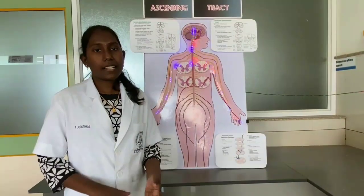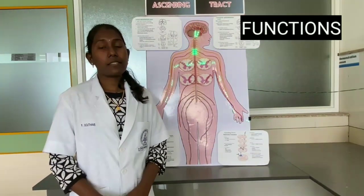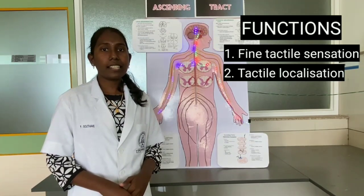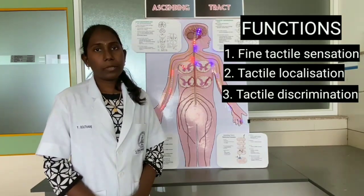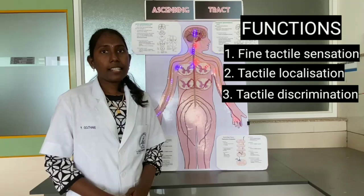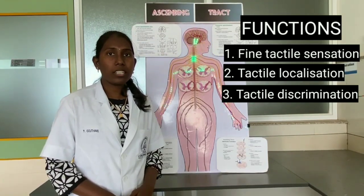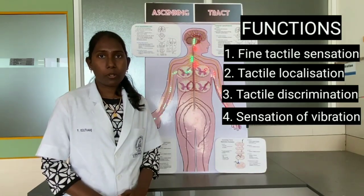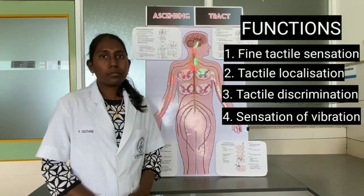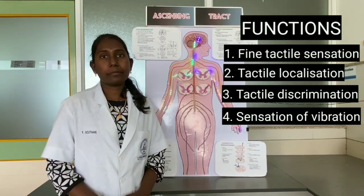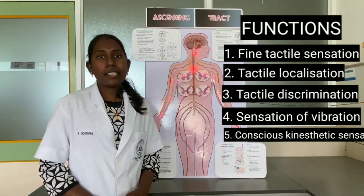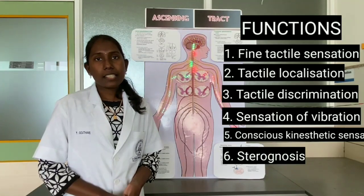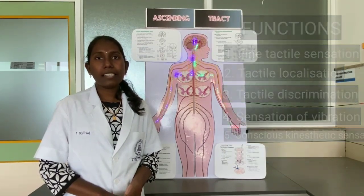Functions of the tracts of Goll and Burdach include five tactile sensations: tactile localization — the ability to locate the area of the skin where a tactile stimulus is applied while closing the eyes; tactile discrimination, also known as two-point discrimination — the ability to recognize two stimuli applied over the skin simultaneously while closing the eyes; sensation of vibration — the ability to perceive vibrations from a vibrating tuning fork placed over bony prominences; kinesthetic sensation — the sensation or awareness of various muscular activities in different parts of the body; and stereognosis — the ability to recognize an object by touch while closing the eyes.